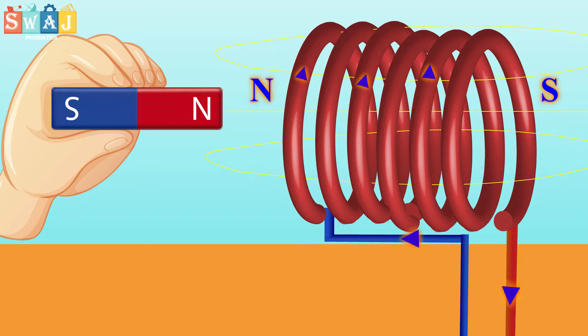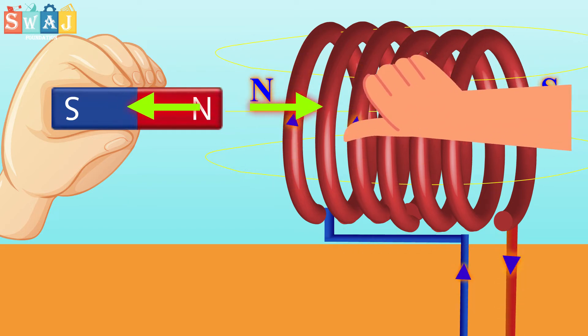If the coil is to oppose the motion of the bar magnet, the face of the coil towards the magnet must become the north pole. The two north poles will then repel each other.